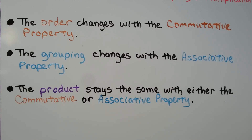The order changes with the commutative property. The grouping changes with the associative property. The product stays the same with either the commutative or associative property.